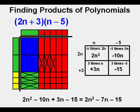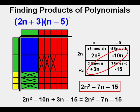We then take the two x terms positive 3n and negative 10n so they become together negative 7n. And now we can determine our answer 2n squared minus 7n minus 15. The same answer we got earlier using algebra tiles.